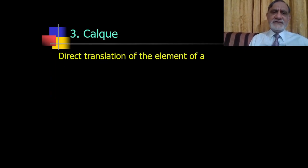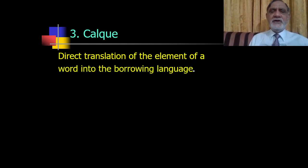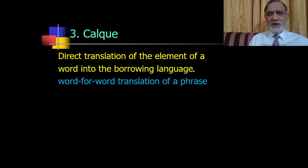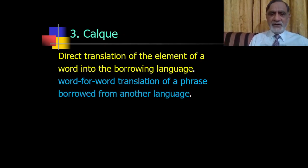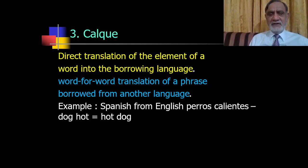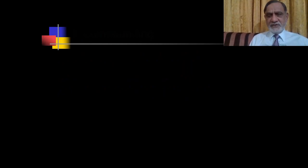The third type of word formation is calque. In calque, what is done is a direct translation of the elements of a word into the borrowing language — a word-for-word translation of a phrase or word from another language. For example, the Spanish translation of the English phrase 'hot dog' renders it as 'perro caliente', translating each element directly.